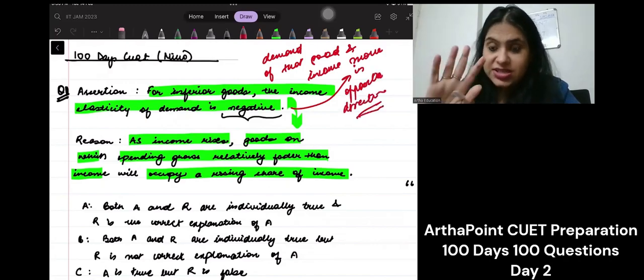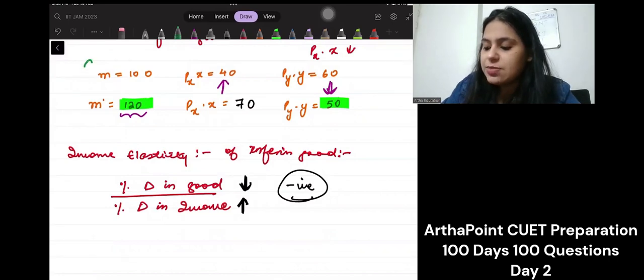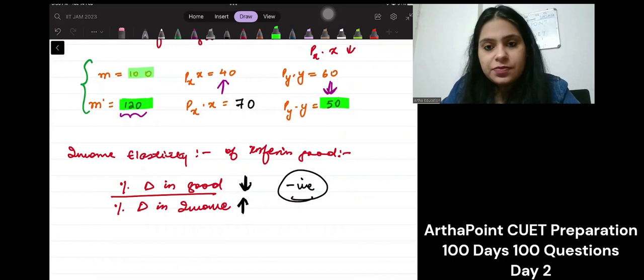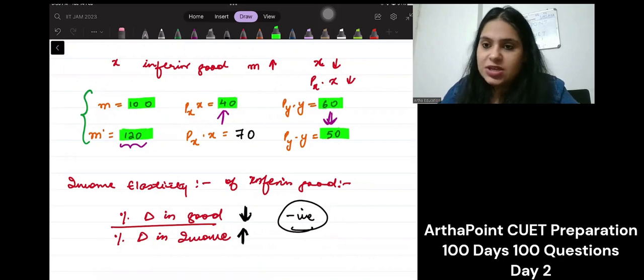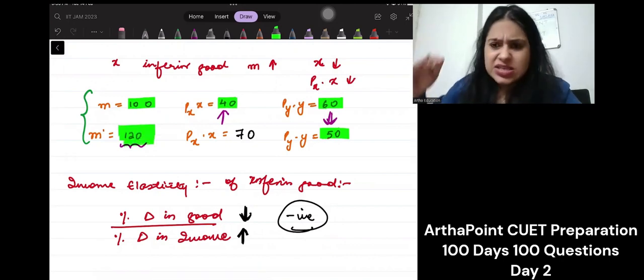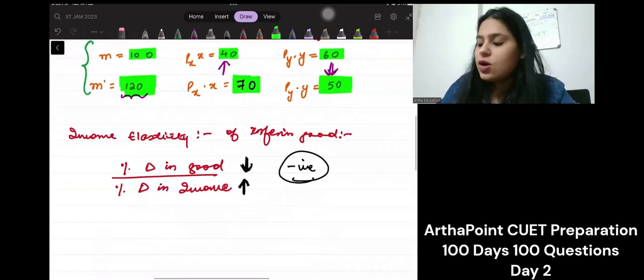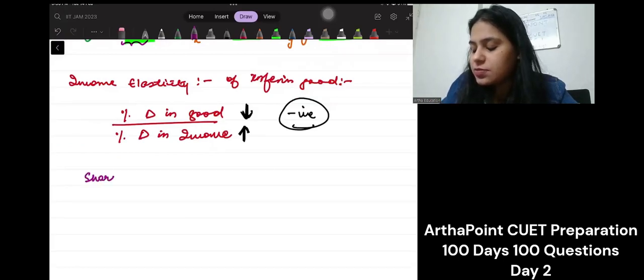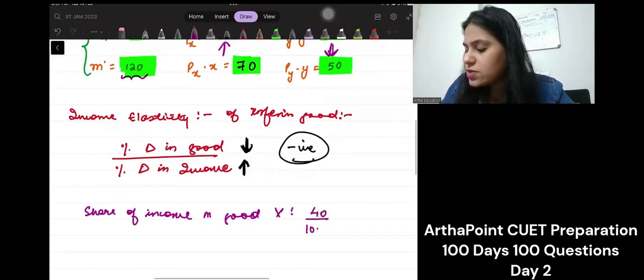Let's think a little more. Let's take this example. My income was 100, I was spending 40 on good X and 60 on good Y. My income increased, I decreased the demand of good Y. Y was an inferior good, so I started spending only 50 on good Y. That means I will spend remaining 70 on good X. What was the share of income on good X earlier? I was spending 40 by 100, so 2 fifths of my income on good X.